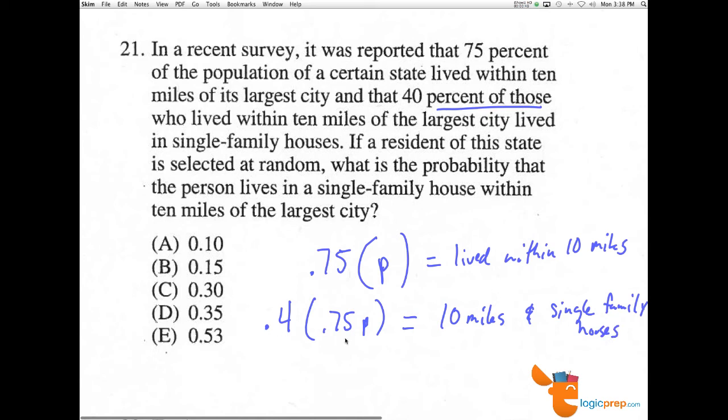If you multiply 0.4 times 0.75, we get 0.3P equals these same people, 10 miles in single-family houses.